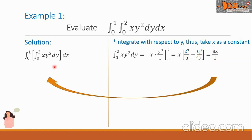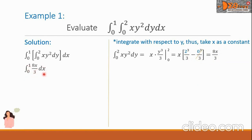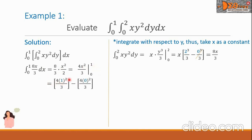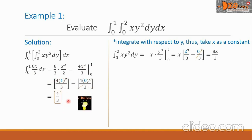We substitute this value into the outer integral. So we now have the simplified integral from 0 to 1 of 8x/3 dx. The integral of 8x/3 is 8/3 times x²/2, which simplifies to 4x²/3, to be evaluated from 0 to 1. Substituting the values, we have 4 times 1² over 3 minus 4 times 0² over 3. The second term cancels out because of the 0, giving us a final answer of 4/3.